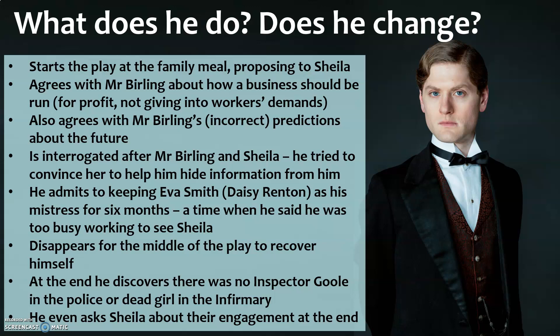He is interrogated by the Inspector after Mr Burling and Sheila have been questioned. Earlier, he tried to convince Sheila to hide information from the Inspector. When being interrogated, he admits to keeping Eva Smith — at this point known as Daisy Renton — as his mistress for six months, even though he was in a relationship with Sheila. During those six months, he had told Sheila he was too busy at work and wasn't able to see her as much as she wanted.